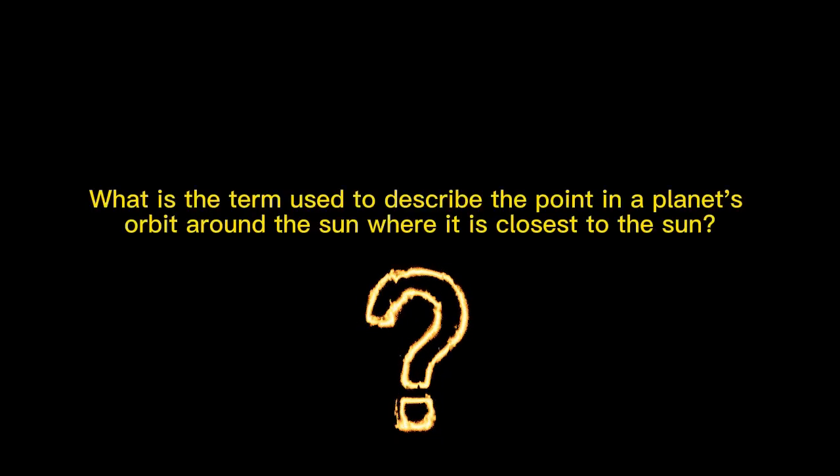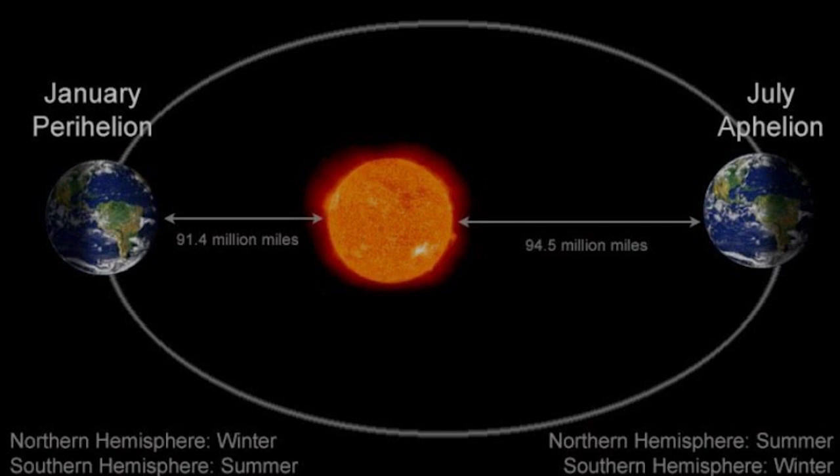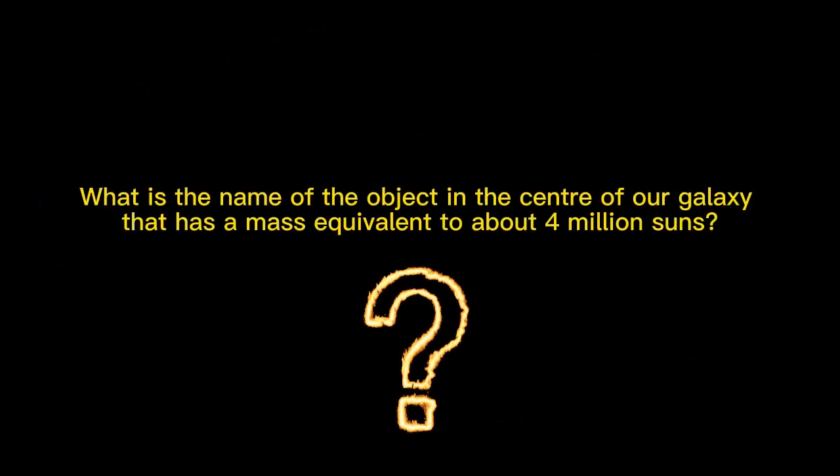What is the term used to describe the point in a planet's orbit around the sun where it is closest to the sun? Perihelion. What is the name of the object in the center of our galaxy that has a mass equivalent to about 4 million suns? Sagittarius A asterisk.